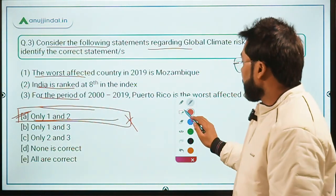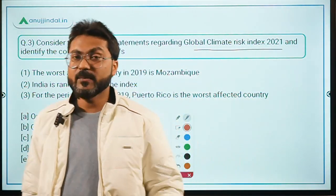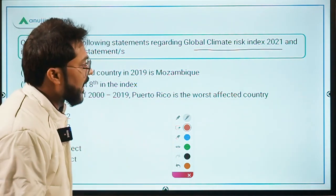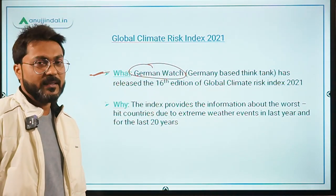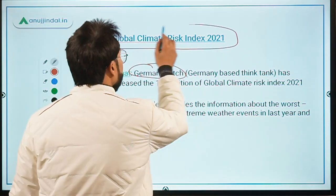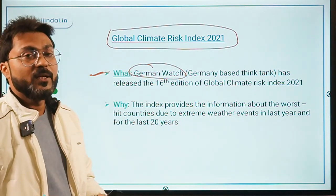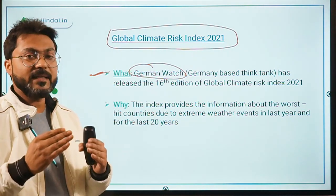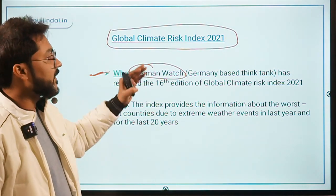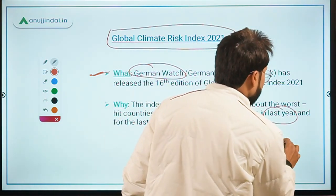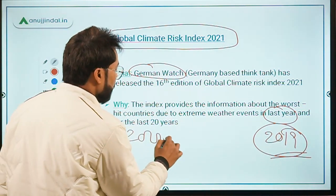Questions three and four are both based on the Global Climate Risk Index 2020-21, released by Germanwatch, a Germany-based think tank. This index lists the countries worst hit by extreme weather conditions. It provides data for the previous year, 2019, as well as for the last 20 years from 2000 to 2019.